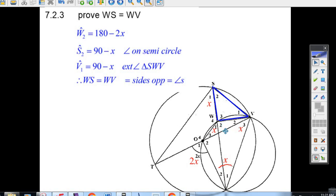Well, that means if we go 180 minus 2x and we minus the 90 minus x, we're going to end up with another 90 minus x. The exterior angle of triangle SVXWV makes V1 90 minus x.